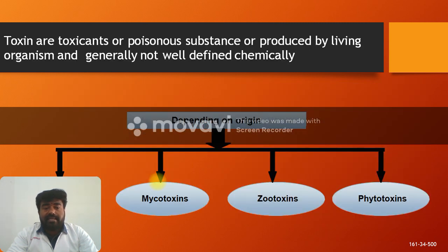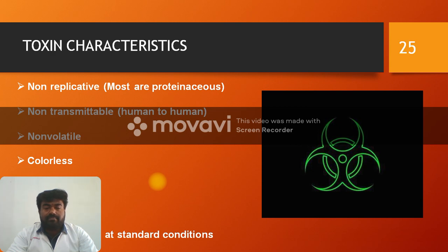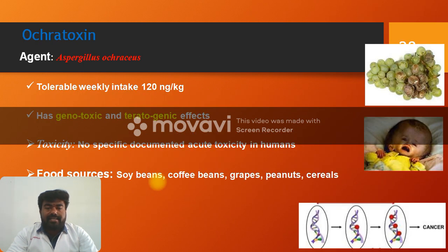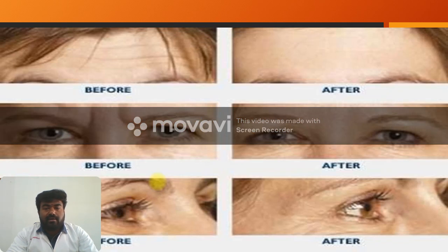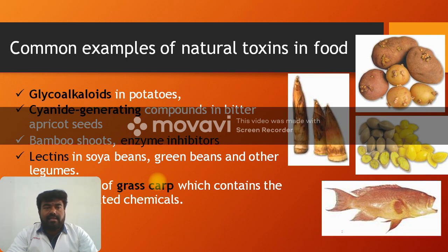Toxins depend on their different origins: mycotoxins, zootoxins, and phycotoxins. Bacteria such as Clostridium botulinum produce toxins. Fungi produce toxins called aflatoxins. Other toxins include acetic acid derivatives, histamine, and glycolysis-related compounds. Toxin characteristics include being non-replicable, non-transformable, and colorless. Examples include aflatoxin, mycotoxin, botulinum toxin. Before and after a toxin infection, changes in head and eye color can occur.